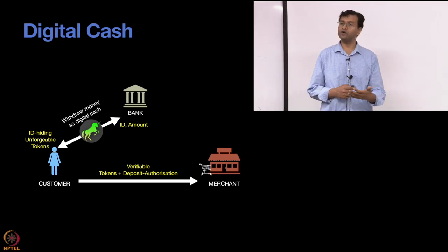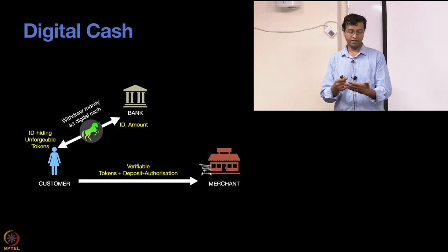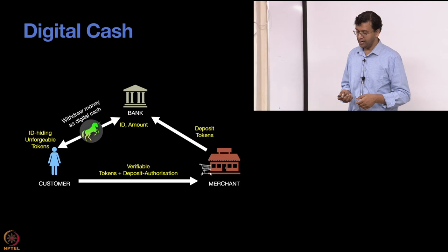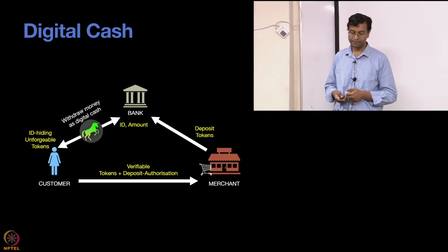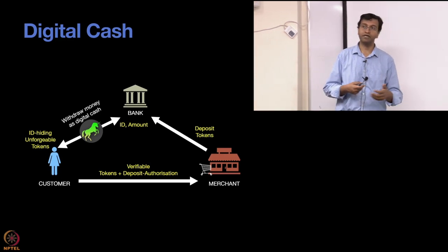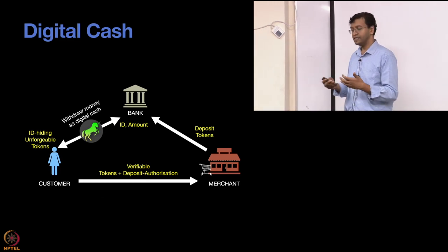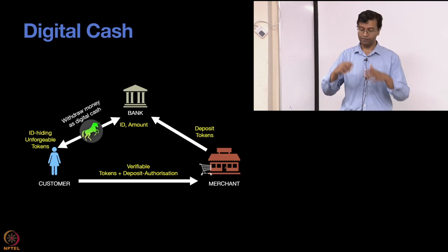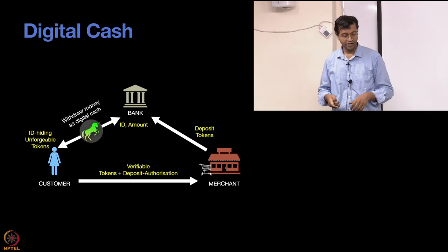The merchant, when they get the token, doesn't really know your ID. All they know is that it's for so much amount, and it came with an authorization verifiably from whoever owns this token. At the end of the day, the merchant has collected a bunch of tokens and can deposit all of them to the bank. They don't have to wait — they can do the verification locally, which reduces the load on the banks and makes the whole transaction faster. The depositing is done at the end of the day or in the middle of the night, when things are less busy.